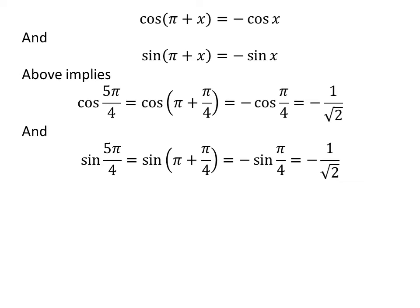So, above implies cosine of 5 times pi upon 4 is equal to minus 1 upon square root of 2, and sine of 5 times pi upon 4 is equal to minus 1 upon square root of 2.